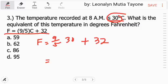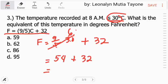Ito muna ang i-solve natin. There are two ways to do this. Ito, gawin mo siyang 6. 30 divided by 5 and that is 6. 6 times 9, 54. 54 plus 32 is equals to 86. So, letter C ang sagot.